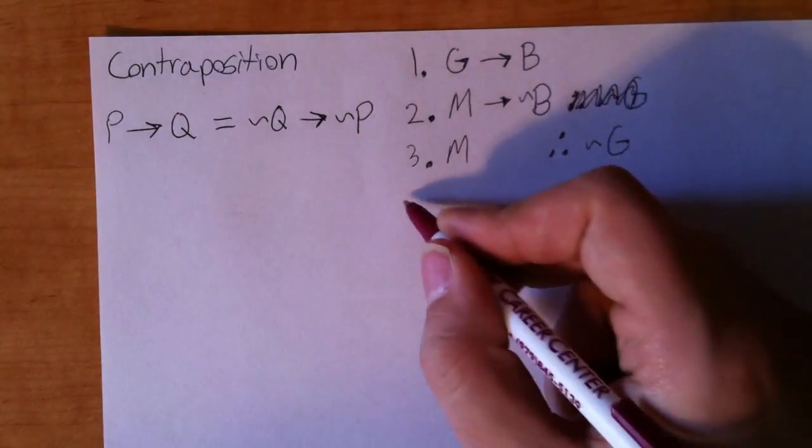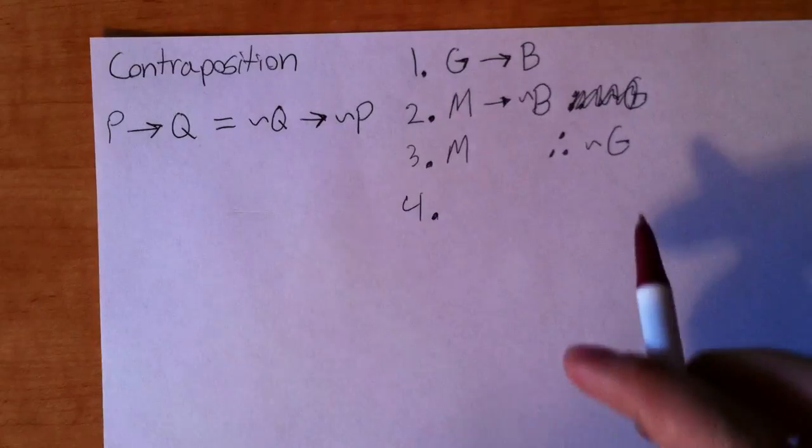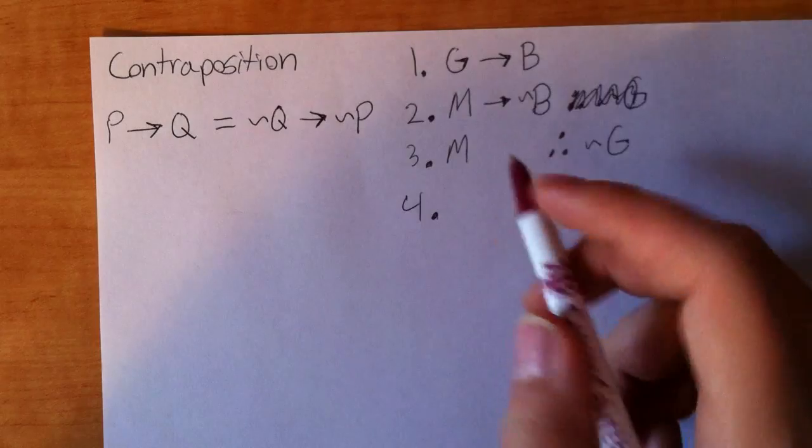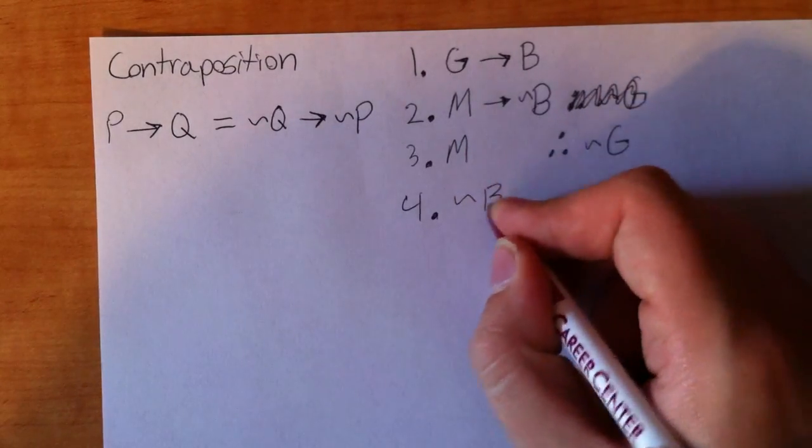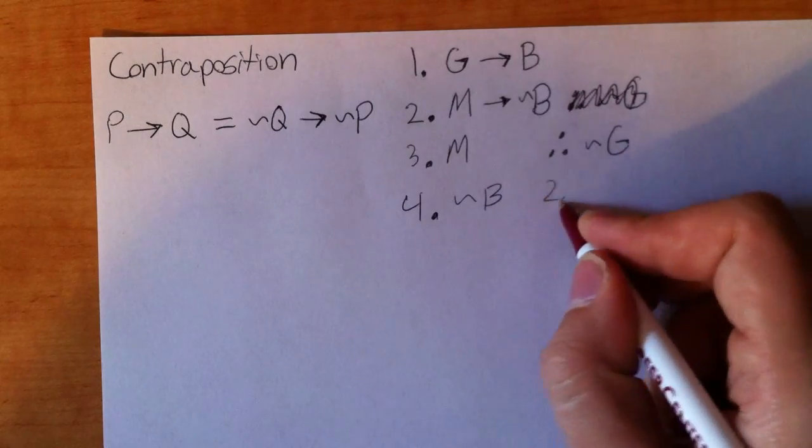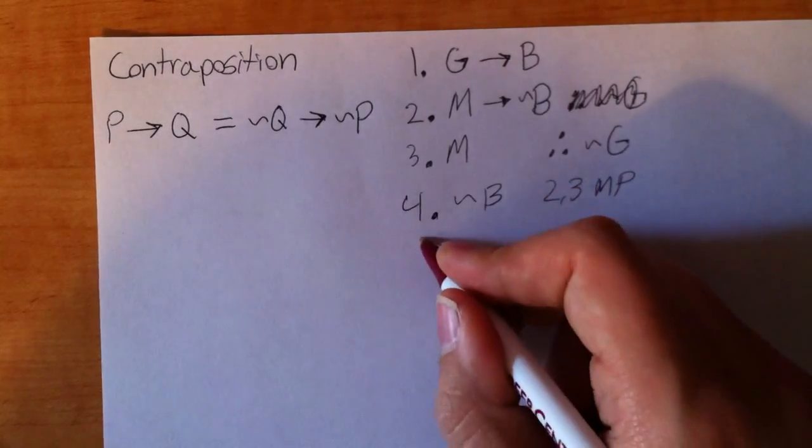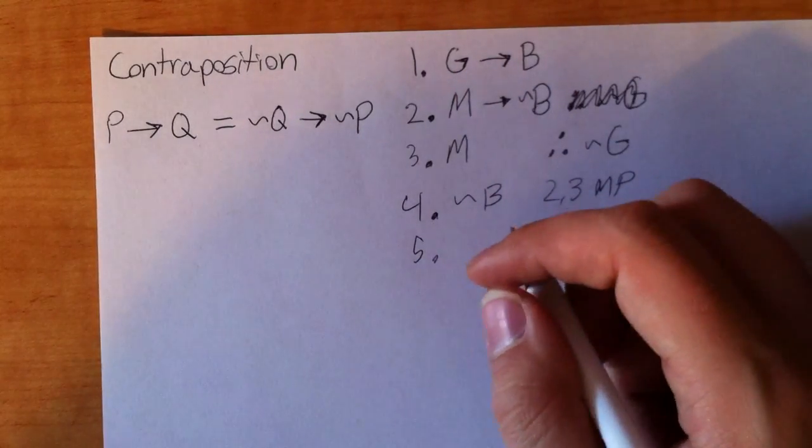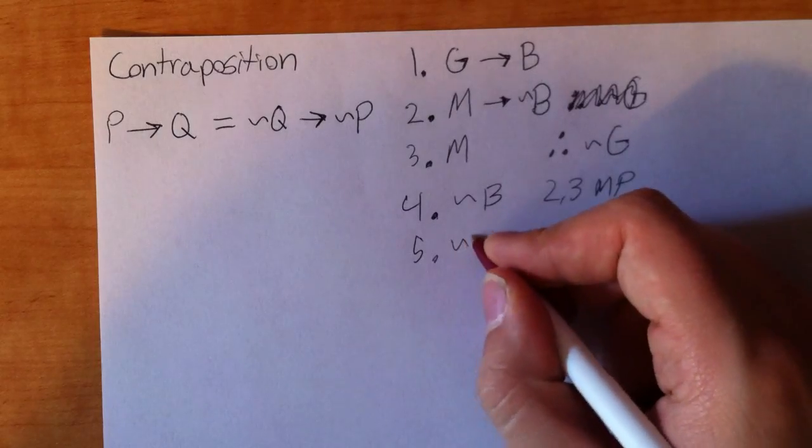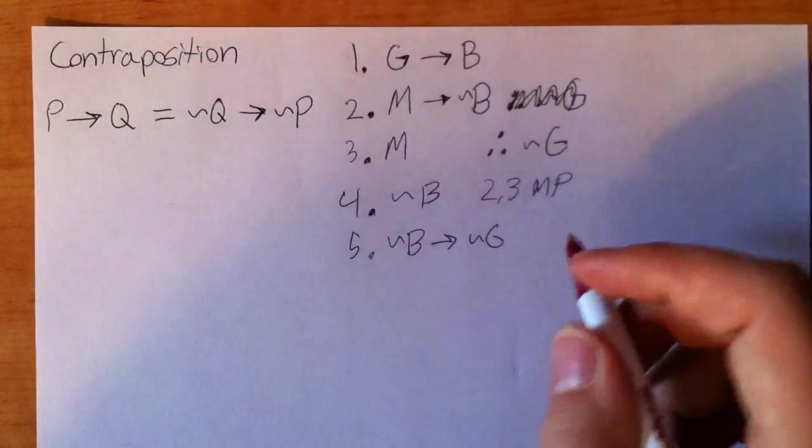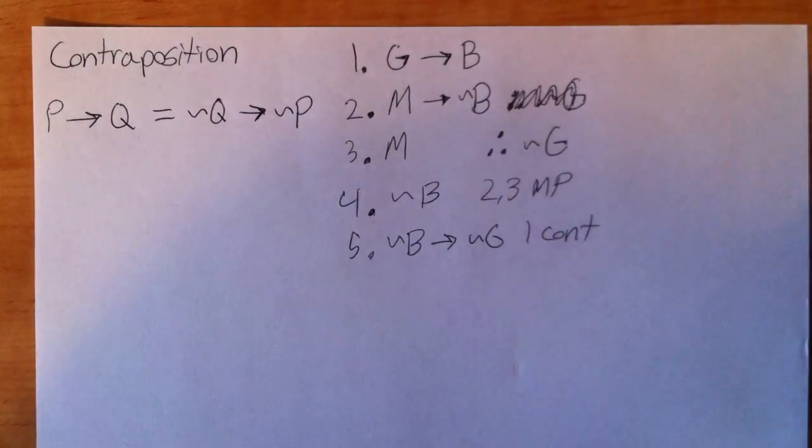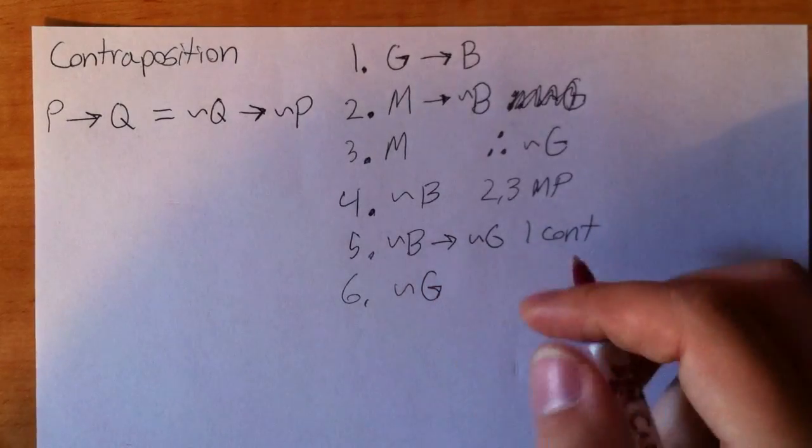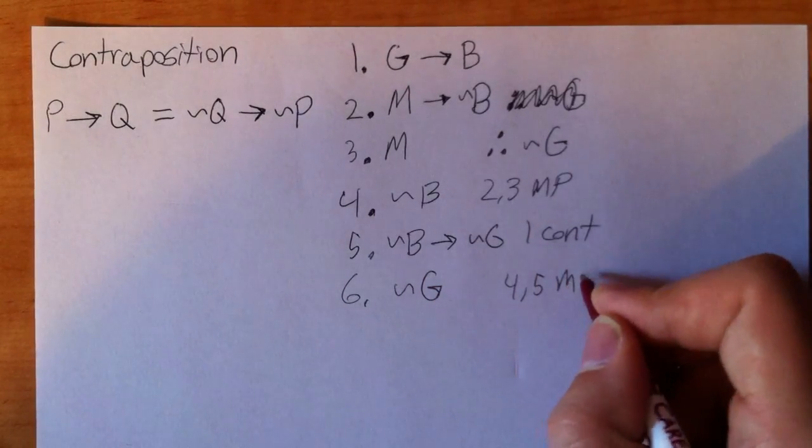So, in this case, I'm looking at this line. I need tilde G. Well, I see a match right off the start. Because of our new rules, don't forget about the basics. There's this clear match for MP right there. So that's 2, 3, MP. Now, I could, if I wanted to, use MT to get tilde G, but I could also, just to illustrate this rule, I could switch it around and go tilde B, arrow, tilde G, line 1, contraposition. And now I've got another match for modus ponens. Tilde G, 4, 5, MP.